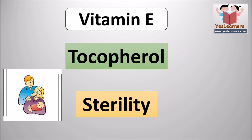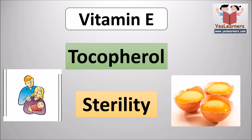The scientific name of vitamin E is tocopherol. The deficiency of vitamin E causes infertility or sterility. Vitamin E is known as beauty vitamin and sterility vitamin. It is essential for reproductive functions. The vitamin which is used as a hormone is vitamin E. Vitamin E is abundant in egg yolk.